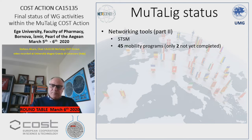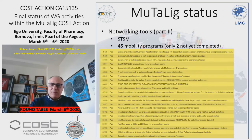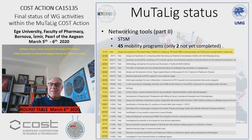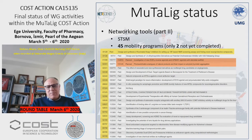What about the short-term scientific missions? We have enrolled 45 mobility programs. Here you see a first list and a second list. Only two of them are not completed. I believe those numbers are quite important to understand the impact of our COST action, especially in young investigators.